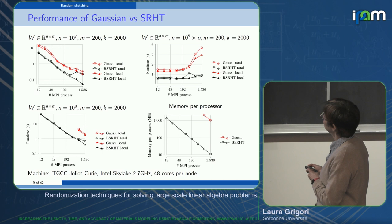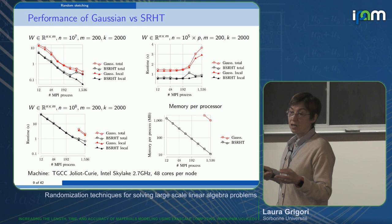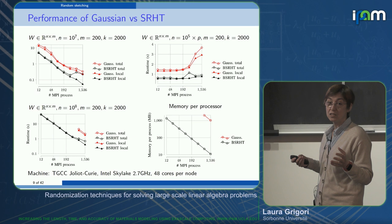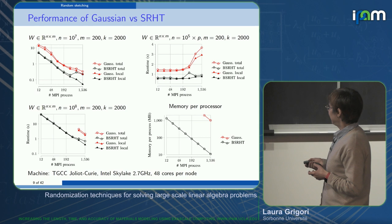In terms of weak scaling — increasing the number of rows to keep the same matrix size per processor — we get quite good behavior for the block SRHT. This part demonstrates that sketching is efficient, and randomization is appropriate to use because we want the sketching to be quick.